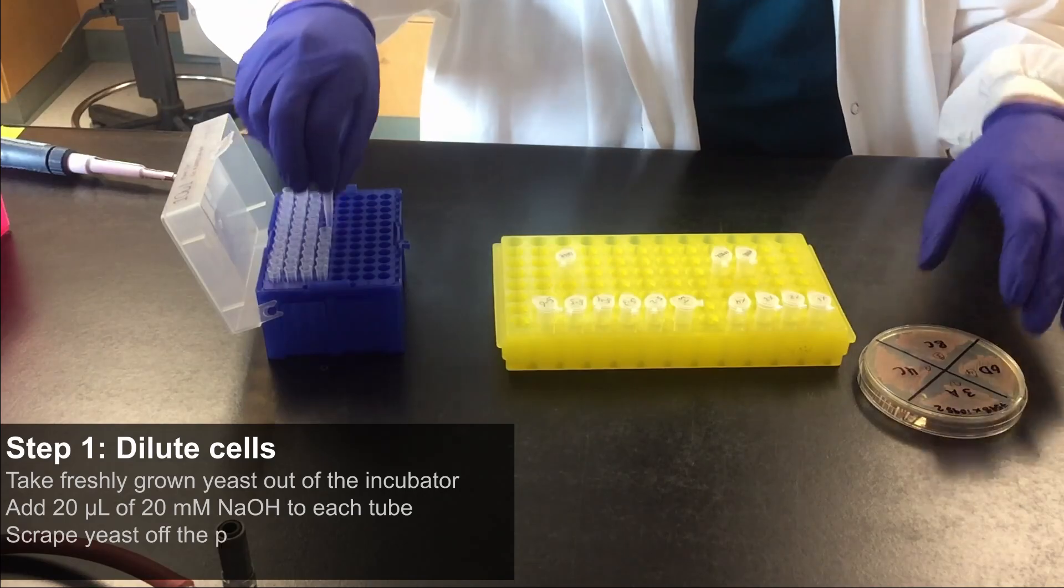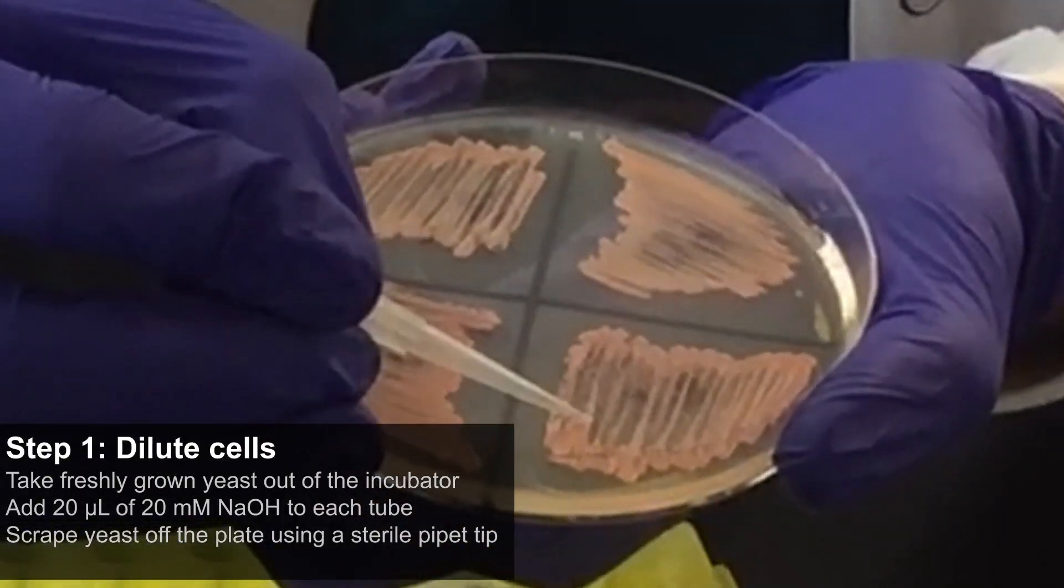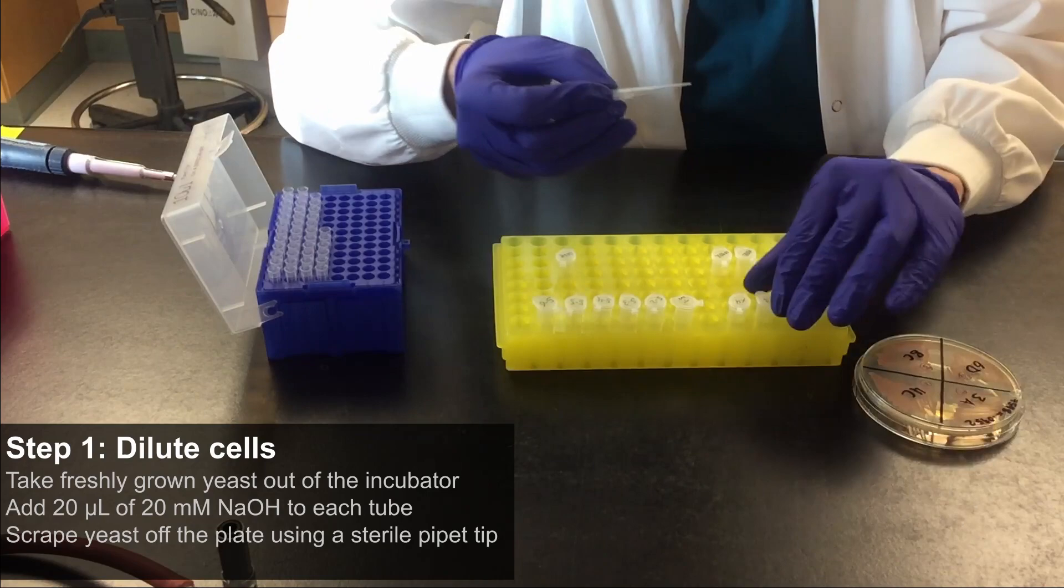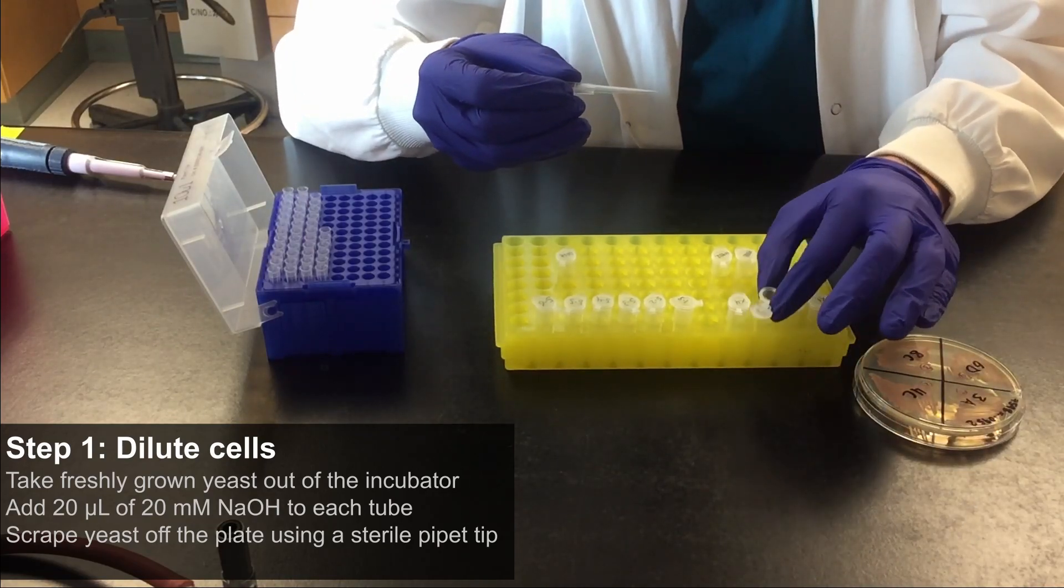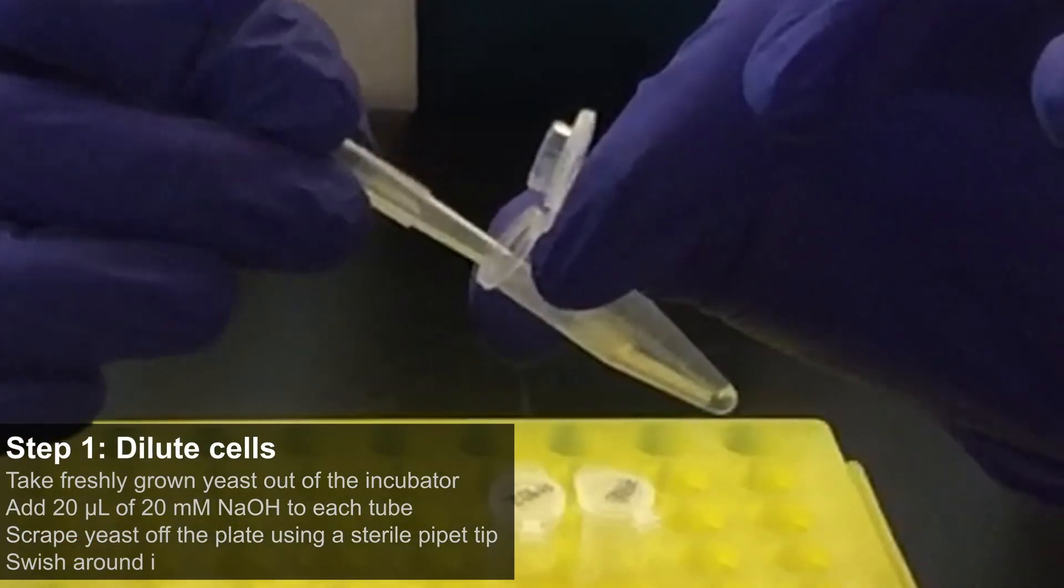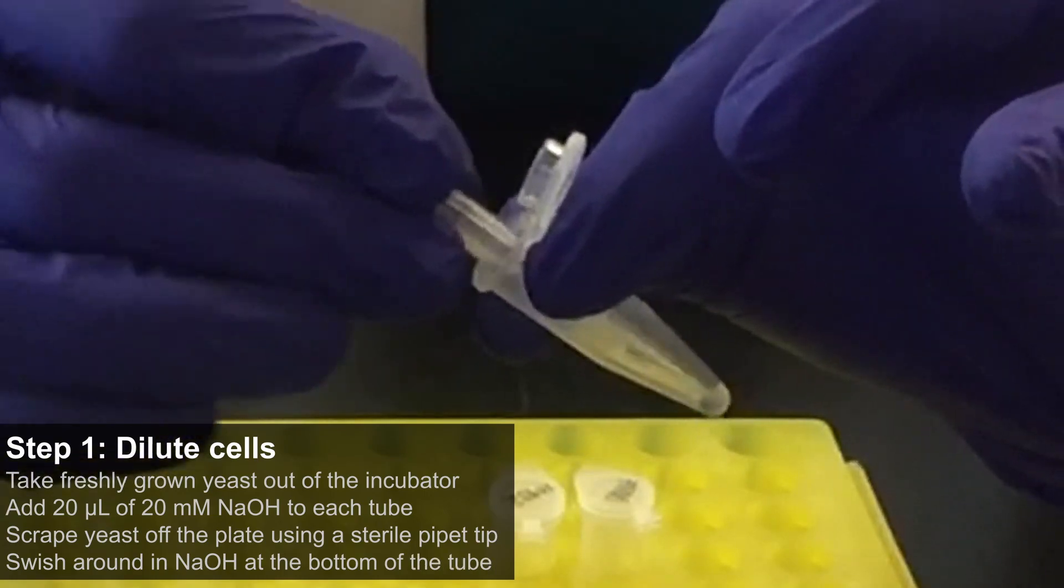Scrape yeast off the plate using a sterile pipette tip. Swish around in sodium hydroxide at the bottom of the tube.